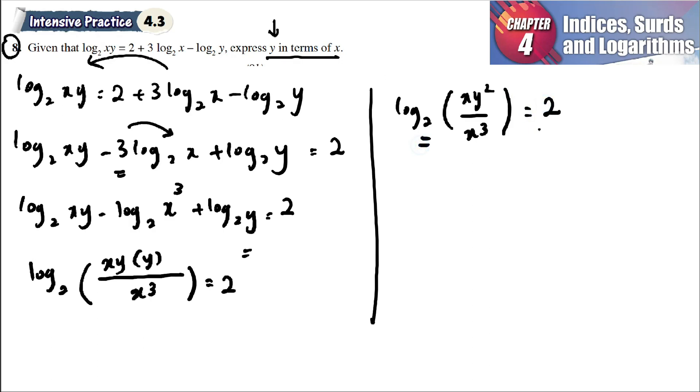To remove the log, you know that this one power at the back here, we get what is in the middle. xy squared divided by x cubed is equal to 2 power of 2. x and x cubed, you can cancel out.